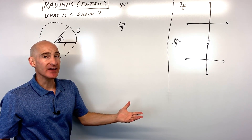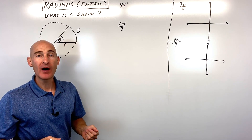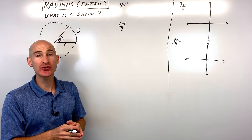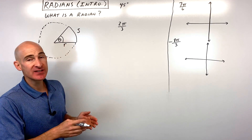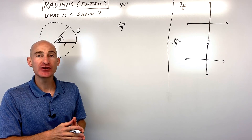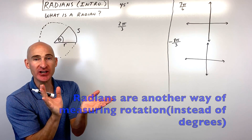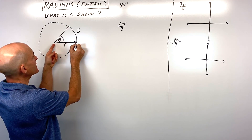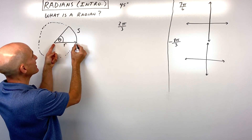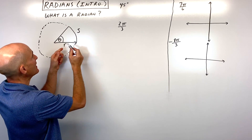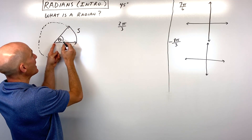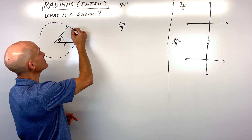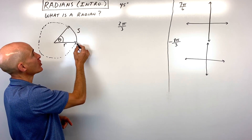So what exactly is a radian? Well, we already know about how to measure angles in degrees — there are 360 degrees in a circle. All a radian is, is just another measure of rotation. You can think about this like a spinner: you're spinning it and it rotates to here. You can see that this arc it traverses, we're going to call S.